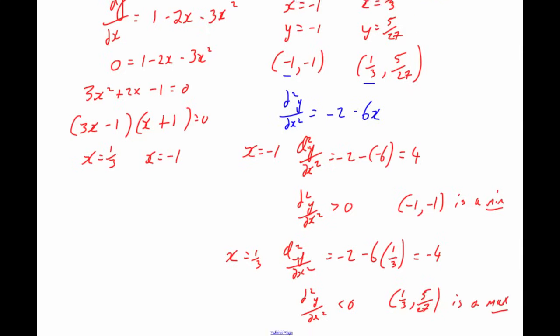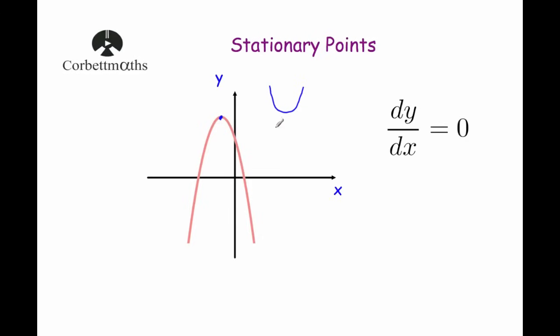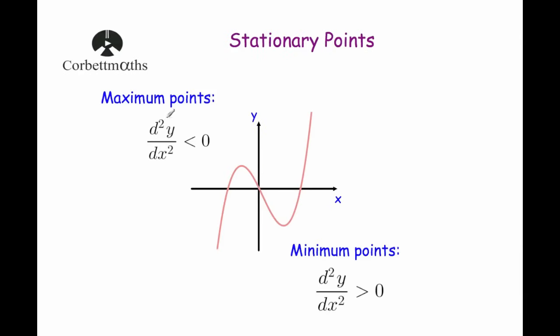To find the coordinates of stationary points, use the fact that dy/dx equals zero. To find if a stationary point is a maximum or minimum, use the second derivative: d²y/dx² is negative for a maximum, and d²y/dx² is positive for a minimum.